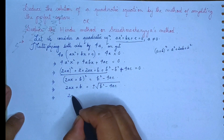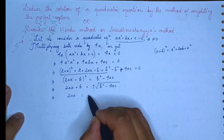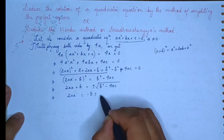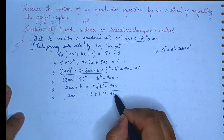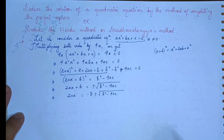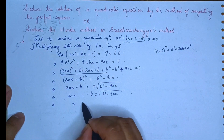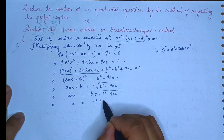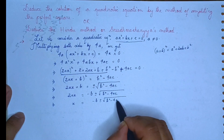Therefore, 2ax plus b equals plus or minus root over b squared minus 4ac. So, x equals minus b plus or minus root over b squared minus 4ac.